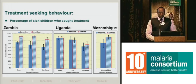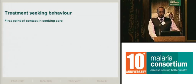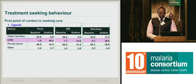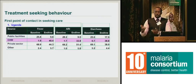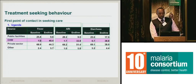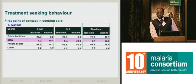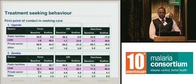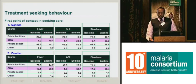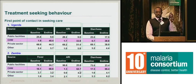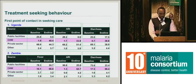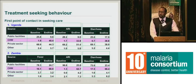Going on to the first point of contact in seeking care: in Uganda, we see a particular trend in community health workers, called VHTs. For all three conditions, at baseline only 1.9% preferred going to the community health workers, and this moved to 40% at endline — the same for acute respiratory infection and diarrhea. The same pattern appears for Zambia, going from 16% to 68%, 1.3% to 62%, and 17% to 66% for the three conditions respectively. Remember, at baseline for most of these countries there were no or very few community health workers. So we see a clear shift to community health workers being the first point of contact in seeking care.